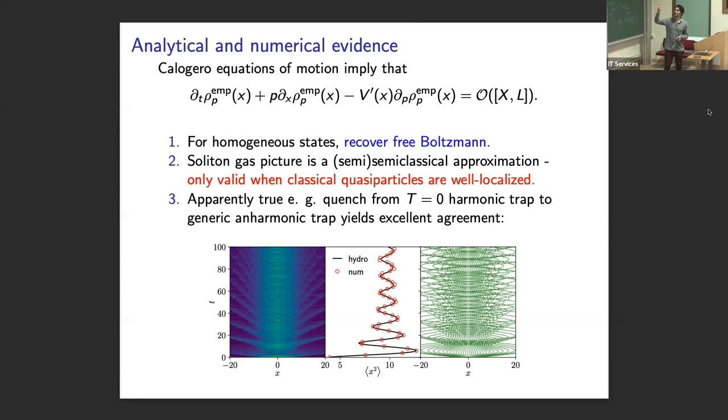So this is an exact expression for the dynamics of Calogero. And if one could understand the commutator corrections and control them precisely, one would have proved generalized hydrodynamics for this model. And so we tested this numerically, and it's apparently true. We quenched from zero temperature to a trap which should have had no integrable properties at all, and we did see perfect agreement with numerics. The reason this is a stringent test, because as you go to zero temperature, this localization property actually should break down. So somehow low temperatures and breaking integrability are the strongest tests of this equation, and it does appear to pass them.